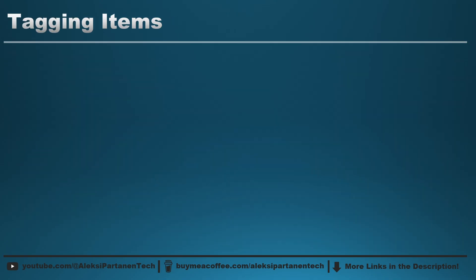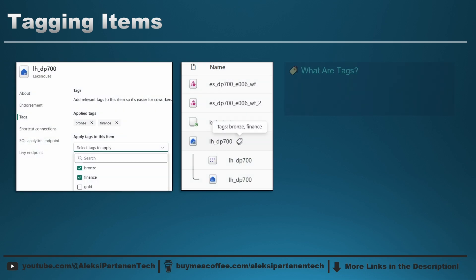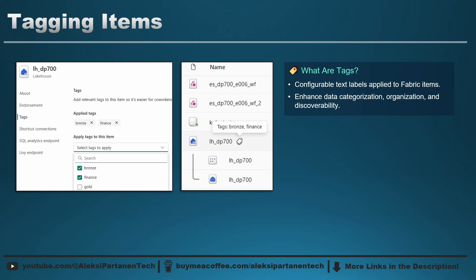Now let's talk about tagging items in Microsoft Fabric. Tags are like custom labels that you can add to Fabric items. They help you keep things organized and easy to find — they are configurable text labels that can be applied to different items. For example, bronze and finance tags can be applied to a lakehouse. The purpose of tags is to enhance data categorization, organization, and discoverability. You can filter items based on the tags that have been applied.